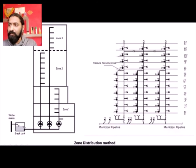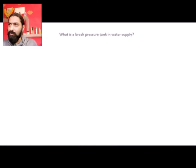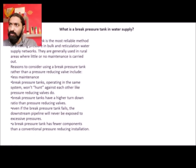In the zoning method diagram, water is fetched from the water mains, then goes to a break tank or underground tank (UGT). The building is divided into three zones — one pump and one tank for each zone. There can be individual water storage tanks, or supply can be through pressure. In the second diagram, you can see pressure reducing valves placed after certain floors, but this method is not economically ideal and requires a lot of maintenance.